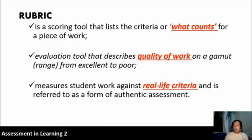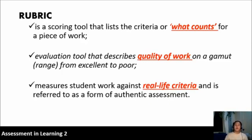To have a short review, last time we had a discussion about designing a performance task and more or less following the GRASP model. We discussed one of the tools used in assessing performances or products — what we call the rubric. A rubric is a scoring tool that lists the criteria of what counts for a piece of work, and it is also an evaluation tool that describes the quality of work on a range from excellent to poor. It measures students' work against real-life criteria and is referred to as a form of authentic assessment.